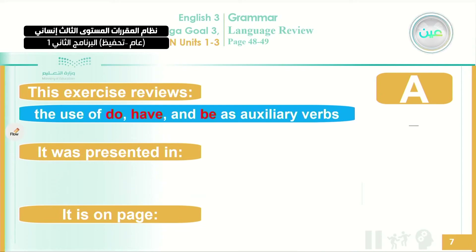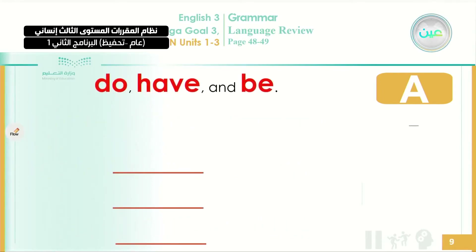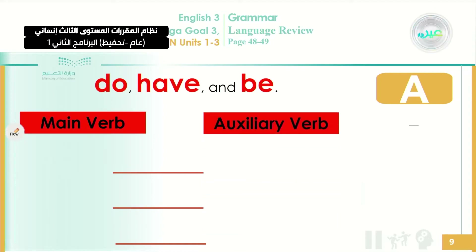Exercise A is teaching you the use of do, have, and be — these are called the auxiliary verbs. What are auxiliary verbs? Auxiliary verbs are verbs you can use as assisting or helping verbs. They are do, have, and be. They come with another verb just to help. Sometimes people confuse using these verbs as main verbs or as auxiliary verbs — we can use them both ways. Let me explain the difference.